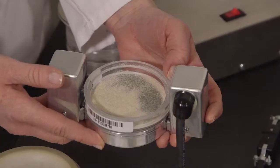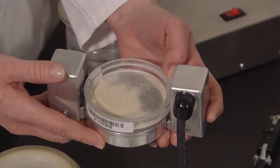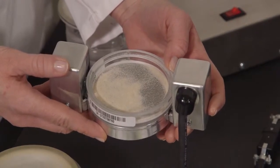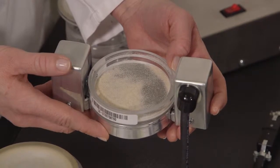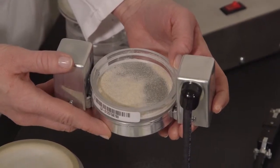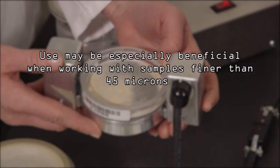By imparting a horizontal tap on alternating sides of the test stack every 4 seconds, the horizontal pulse accessory can help reduce sieve blinding and assist in breaking down sample agglomerates. Use may be especially beneficial when performing separations finer than 45 microns.